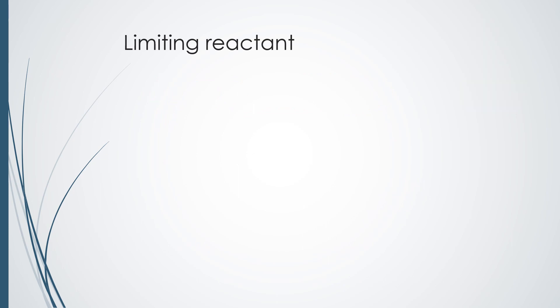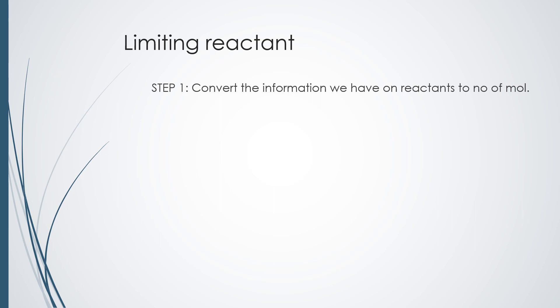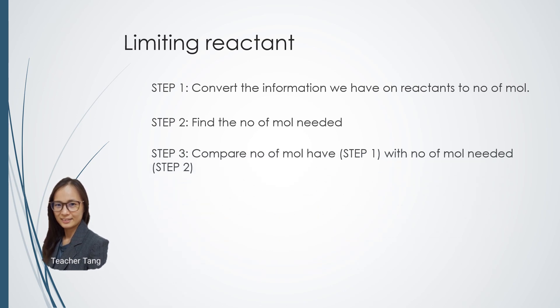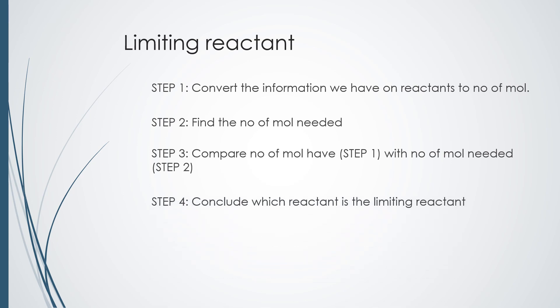From the previous example, we can conclude that to determine the limiting reactant, there are 4 steps. First, convert the information on reactants to number of moles. Second, find the number of moles needed based on the balanced chemical equation. Step 3 is to compare the number of moles in step 1 with the number of moles needed in step 2. Then step 4, make a conclusion about which one is the limiting reactant.